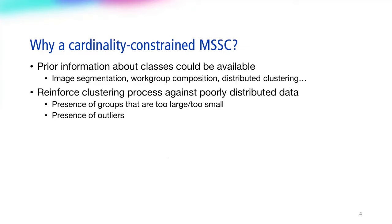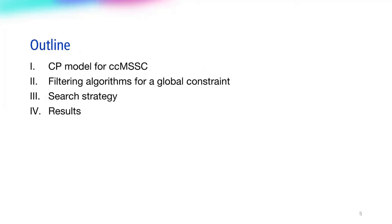This happens, for example, in image segmentation, work group composition, distributed clustering, and so on. Second, cardinality-constraints reinforce the clustering process against poorly distributed data where general MSSC could produce groups that are either too large or too small or be influenced by outliers.